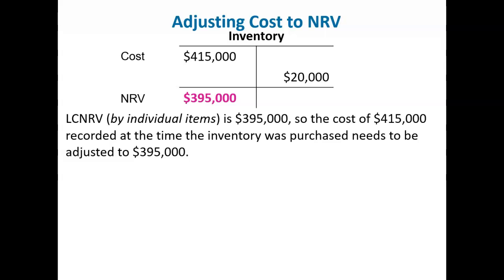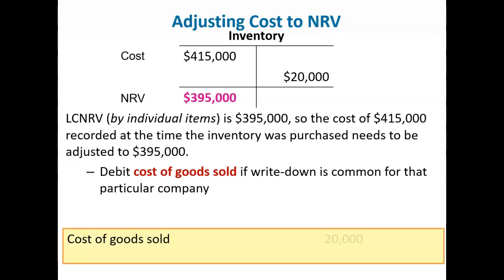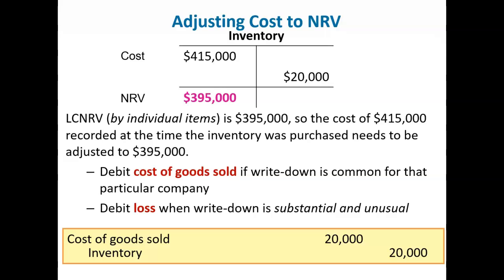When net realizable value is below cost, companies are required to write down inventory to the lower net realizable value. These write-downs usually are included in cost of goods sold because they are a natural consequence of holding inventory. However, when a write-down is substantial and unusual, the write-down should be recorded in a loss account instead. That loss must be expressly disclosed, either with a disclosure note alone or by also reporting the loss in a separate line of the income statement, usually among operating expenses.